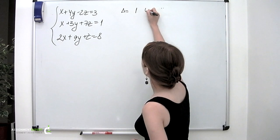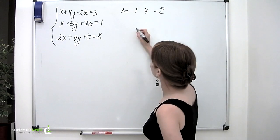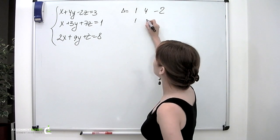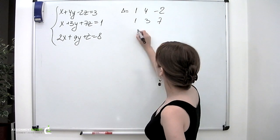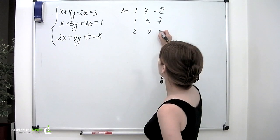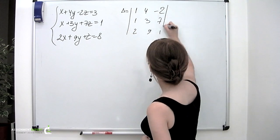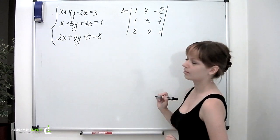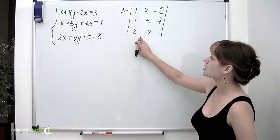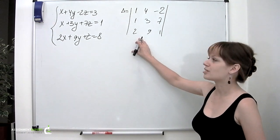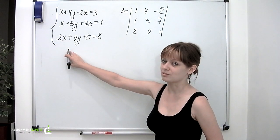Delta is the 3x3 determinant with entries: 1, 4, minus 2 in the first row; 1, 3, 7 in the second row; and 2, 9, 1 in the third row. As you can see, it consists of the coefficients appearing on the left side of our system.